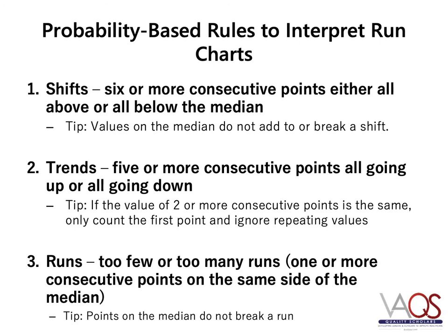Shifts are six or more consecutive points either all above or all below the median. Points that are on the median do not add to or break a shift. Shifts are a robust method for identifying statistically significant change in a system. The likelihood of having six consecutive points all above or all below the median corresponds to a p-value of 0.03.